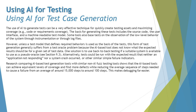One solution is to use back-to-back testing if a suitable system is available, or to use pseudo code. Alternatively, tests could be run with expected results where we are simply expecting that neither an application not-responding nor a system crash occurred — or similar simple failure indicators. This means tests can also be run targeting negative outputs, so we are not limited to only positive scenarios.